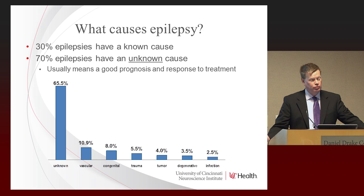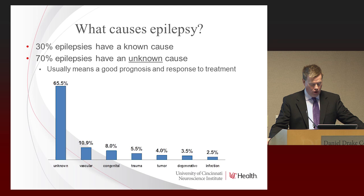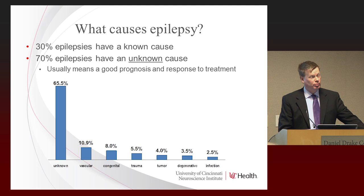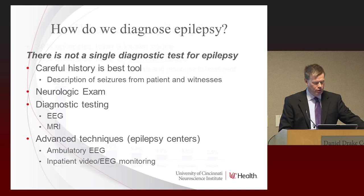There are some known causes of epilepsy, including vascular causes — for example, a prior stroke, a blood vessel abnormality in the brain, brain tumors, and head trauma are all known causes. But those actually make up the smaller number of patients we see; two out of three individuals have an unknown cause. That doesn't mean we don't look — when we see somebody for new onset epilepsy, we always evaluate and try to understand the underlying cause.